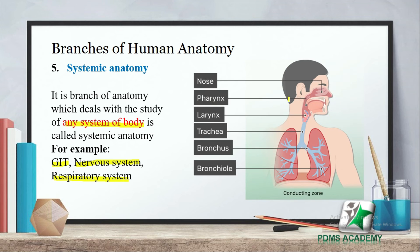For example, if we study our respiratory system, we start with the nasal cavity as the first structure, then the pharynx, then the larynx, then the trachea — studying each structure of the system in order.